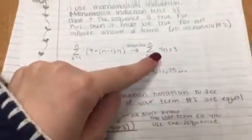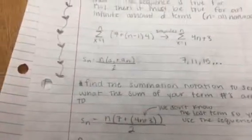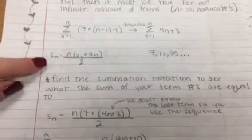So here's my original sequence right here, 4n plus 3. And here are the first three terms. You're just going to plug that into the summation notation formula, which is right here.